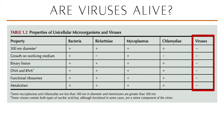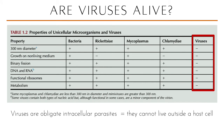Viruses do not have their own functional ribosomes to produce viral proteins; they make use of the ribosomes of the host cells. They may be made of DNA or RNA, but never both — which is usually the case for some bacteria and mycoplasmas. Viruses are therefore referred to as obligate intracellular parasites (OIPs), since they cannot live or multiply outside a host cell.